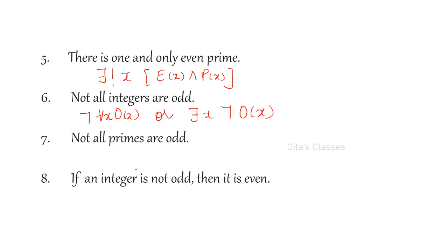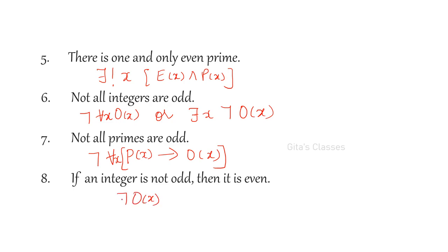Next: not all primes are odd. First consider: if there is a prime number it is odd — for all x, P(x) → O(x). But this is not true; there are even primes. So the negation gives us: not all primes are odd. Similarly: if an integer is not odd then it is even. Not of O(x) implies it is an even number — if not O(x) then E(x).